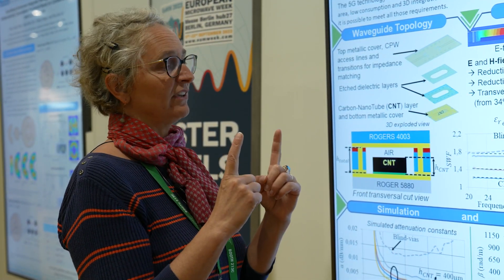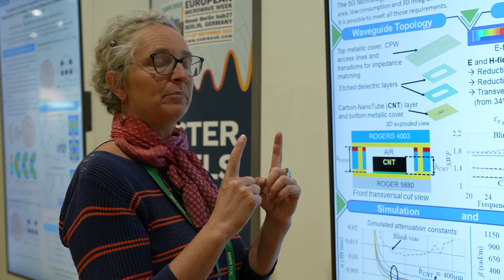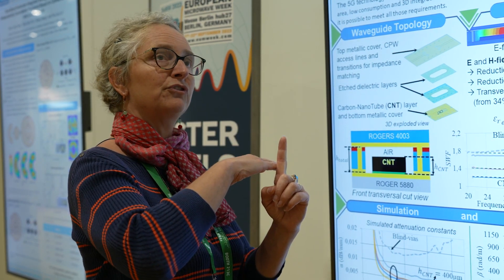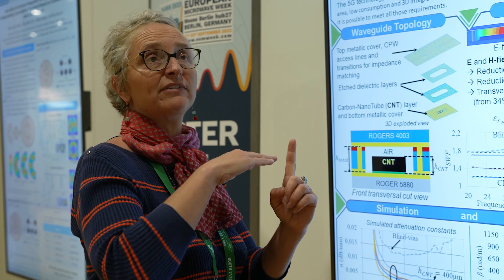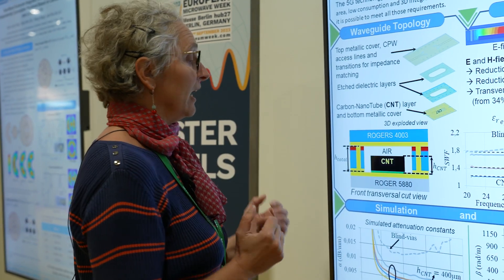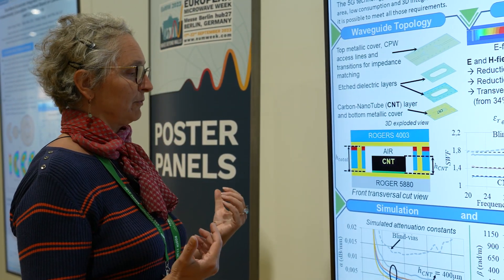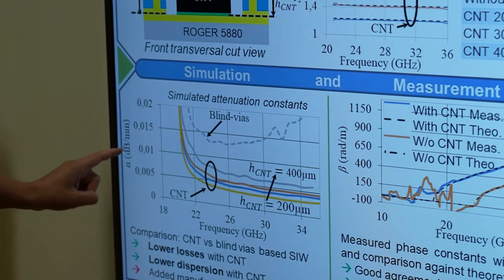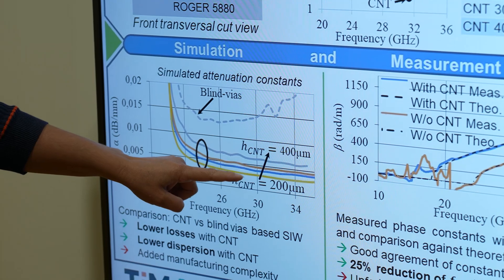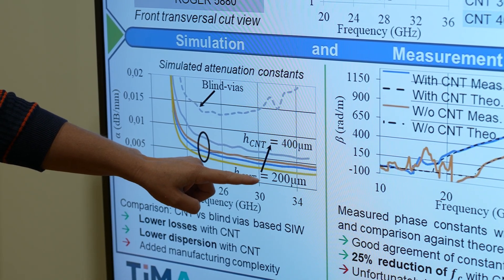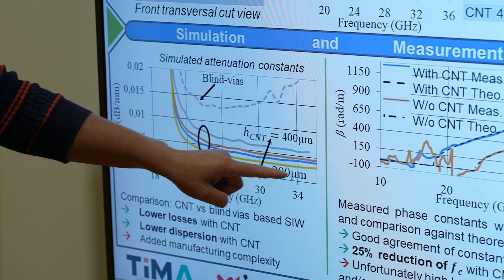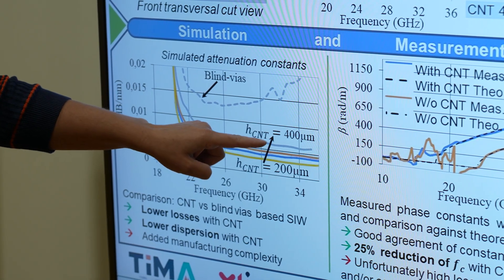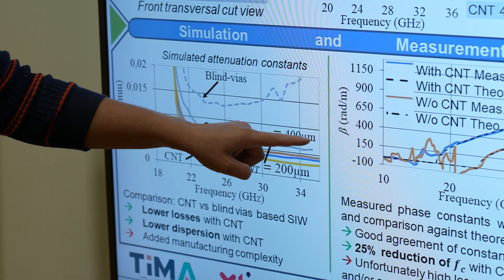Even if their conductivity is not so high, because there is no transversal conductivity, there is no transversal loss. We are expecting very low losses in dB per millimeter by using a CNT forest. You see here in yellow, this is 200 micrometers, and in gray here, 400 micrometers.